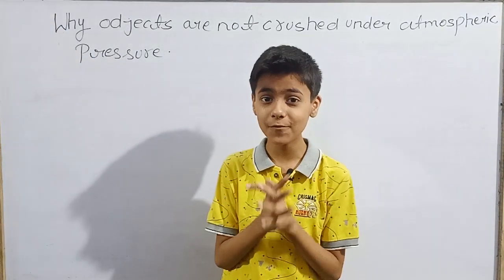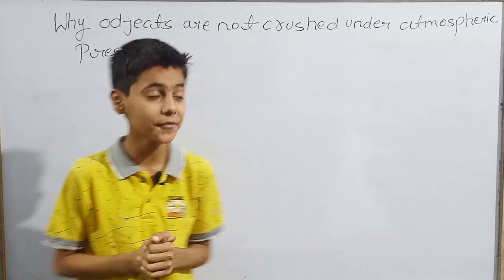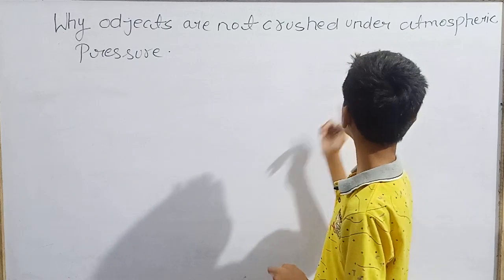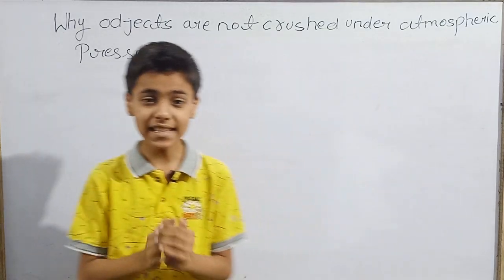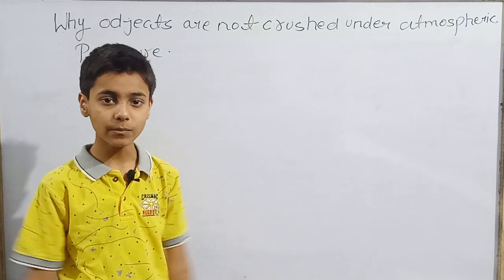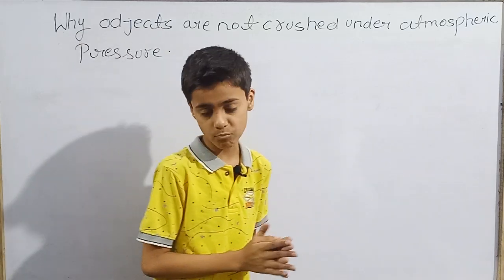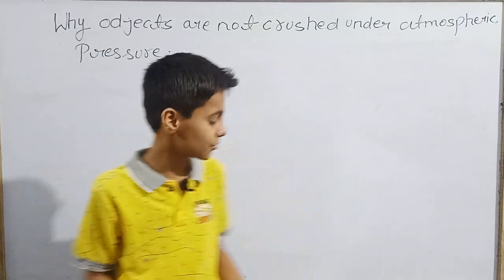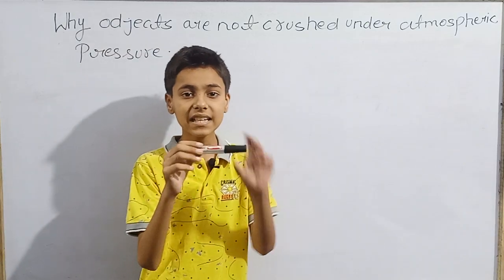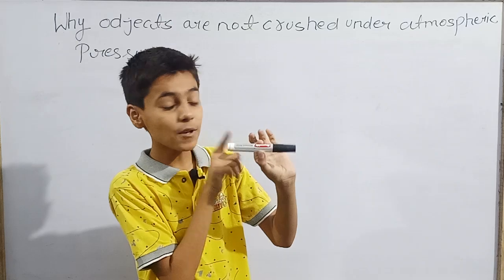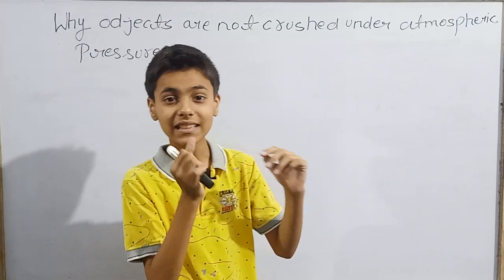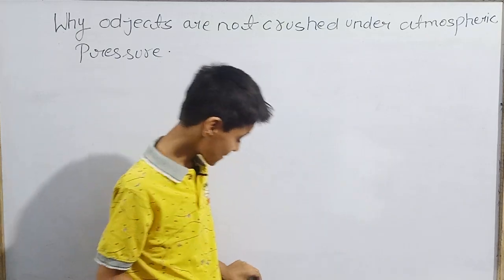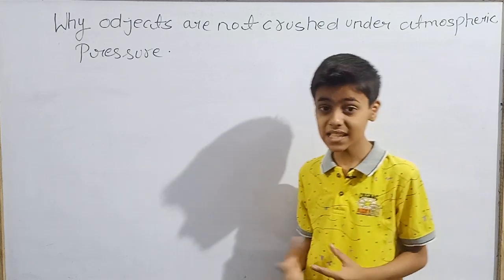Hello everyone and welcome back to SK Manakis. We are back again with a new question on physics — a new interesting point: why are objects not crushed under atmospheric pressure? If we are living at sea level and there is one atmospheric pressure on us, then why don't we get crushed? For a common example, this marker — if there is 1 atm pressure on it, why doesn't it crush? Why does it remain in a stable condition?